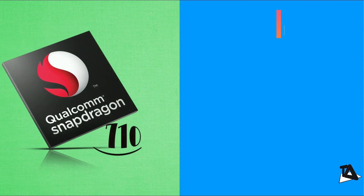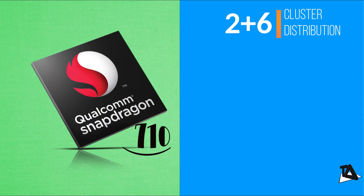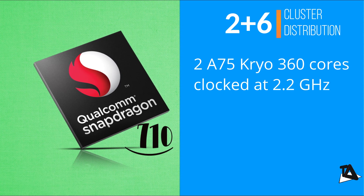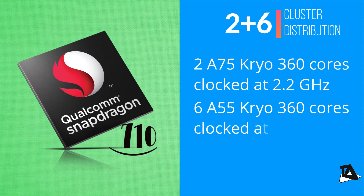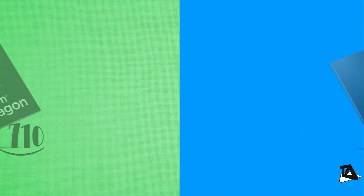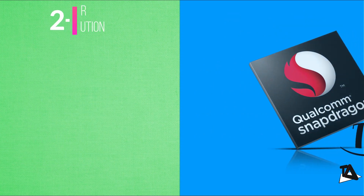The CPU is where these two chipsets are far apart. The Snapdragon 710 consists of two big cores and six little cores for a blend of performance and power consumption — two Cortex-A75 Kryo 360 cores clocked at 2.2GHz and six Cortex-A55 Kryo 360 cores clocked at 1.7GHz. The Snapdragon 730 has the same 2+6 cluster distribution.